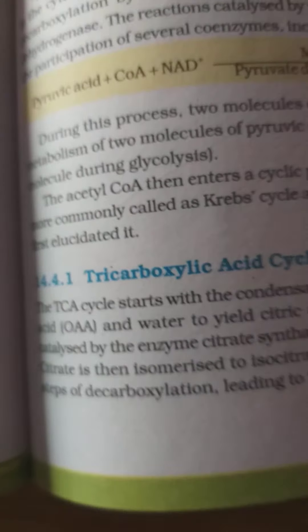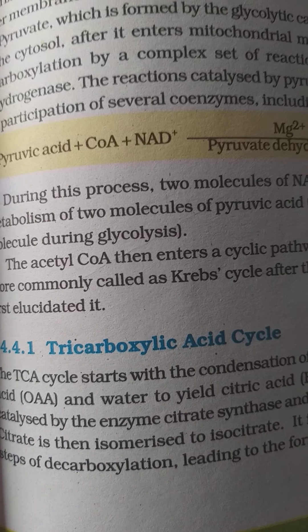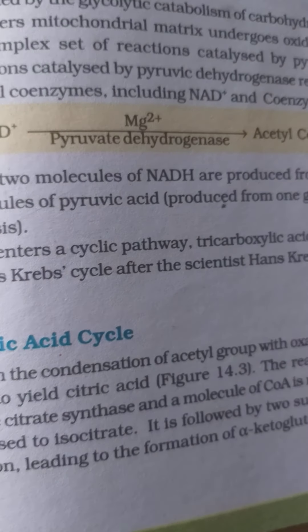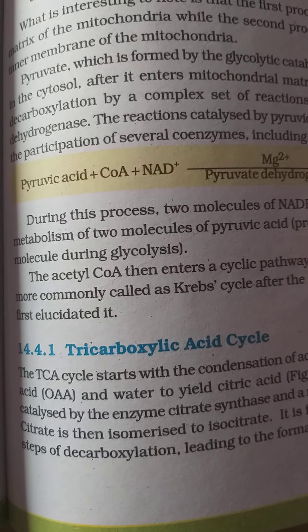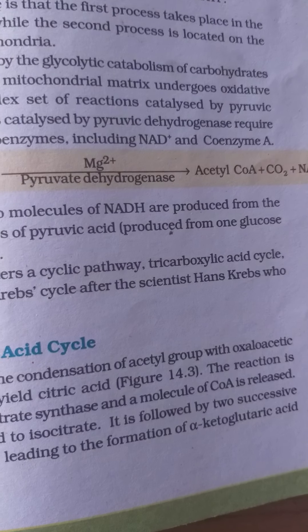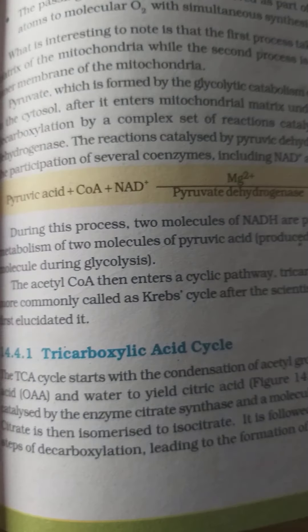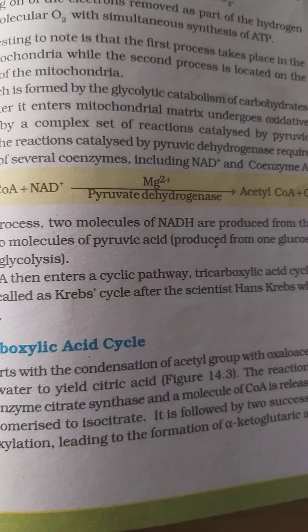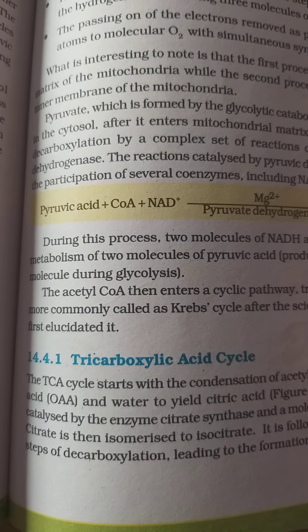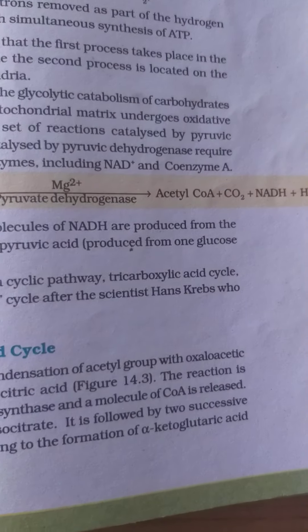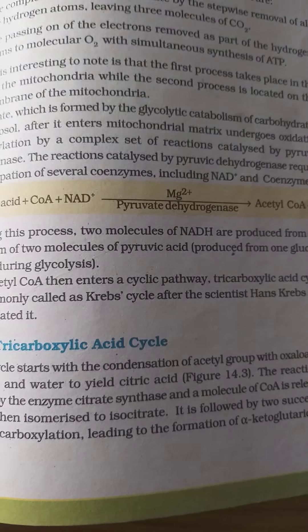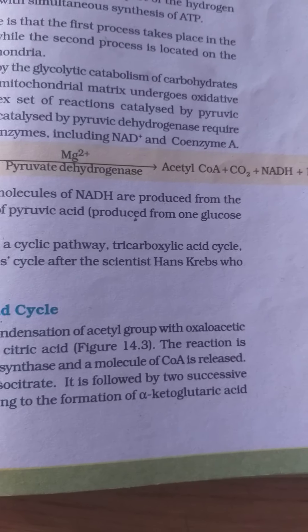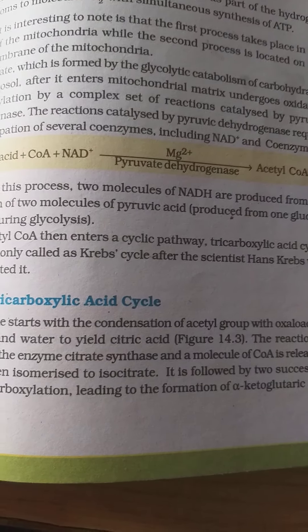The second part is the tricarboxylic acid cycle, more commonly known as the Krebs cycle, named after scientist Hans Krebs who first elucidated it. The TCA cycle starts from the condensation of the acetyl group with oxaloacetic acid (OAA) and water to yield citric acid. So OAA plus water forms citric acid, which becomes the substrate for the Krebs reaction.